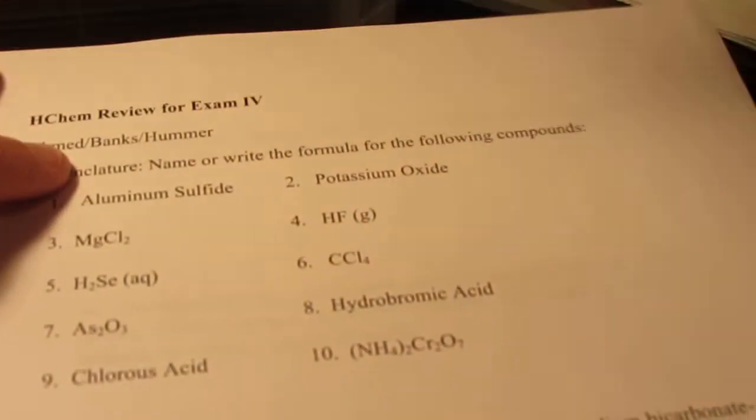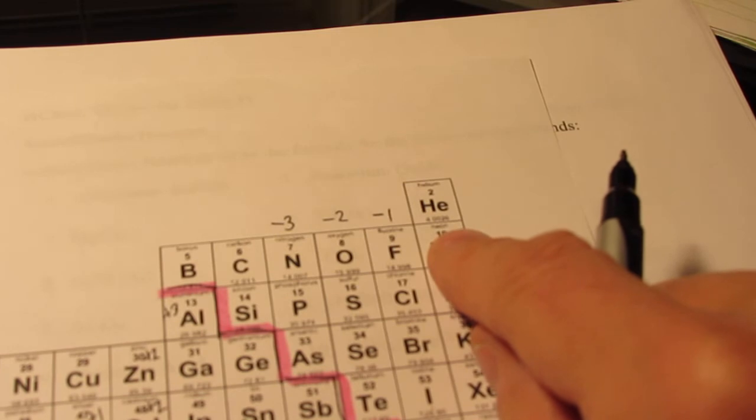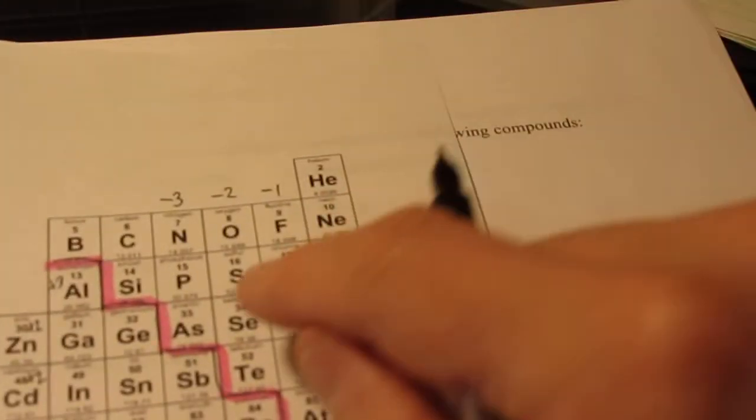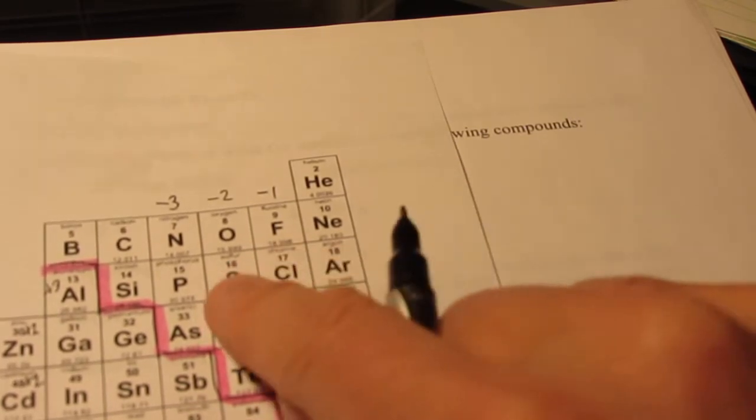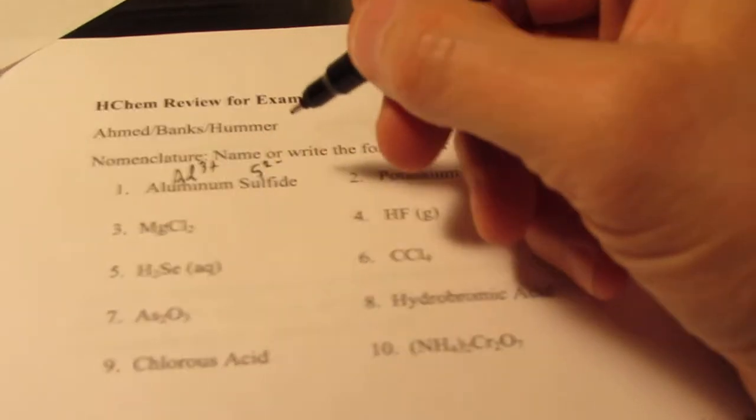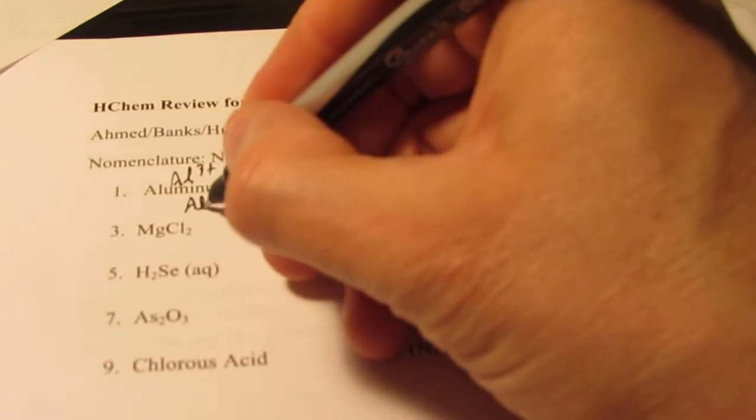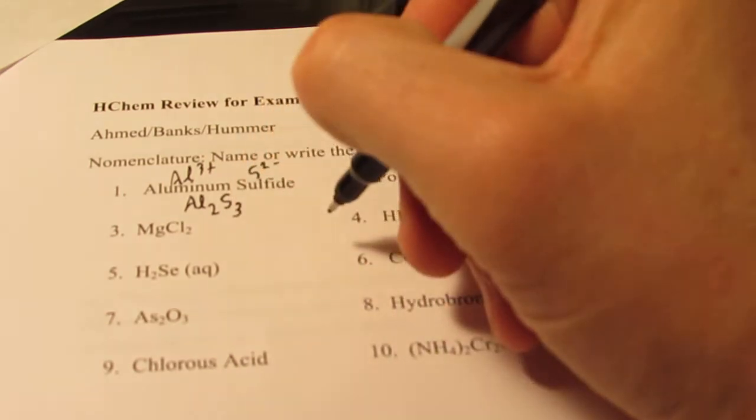Number one, aluminum sulfide. We have a metal and a non-metal. Aluminum, you guys should know, is 3 positive. It has 13 electrons, wants to get to 10 to become like a noble gas. So it loses 3, so aluminum is always 3+. And sulfide comes from sulfur, and that has 16 electrons, wants to get to 18 to become like argon. So it gains 2, it's negative 2.